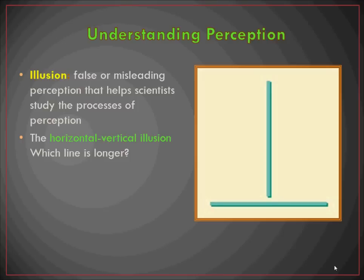We can show somebody a picture and ask them which line seems to be longer. To most people, without knowing any of the tricks, we'll look at this and say it must be the vertical line because it simply looks longer, but really it's the horizontal line that, if you took a ruler to it, would measure to be longer. So we use these different illusions to try to make sense of how we perceive the world.